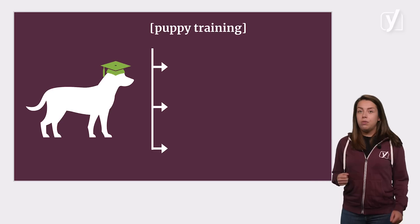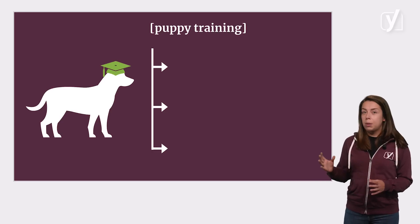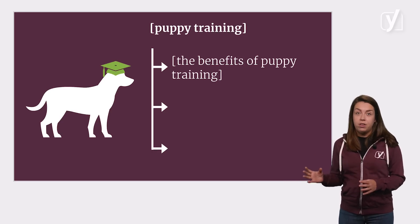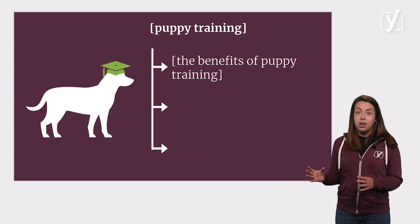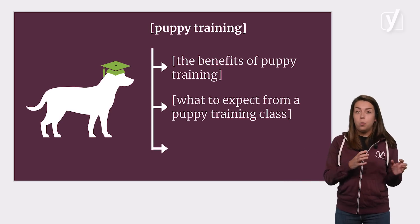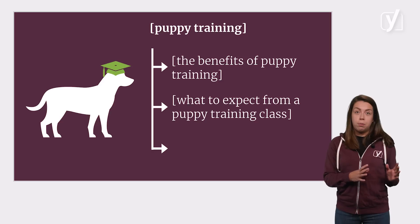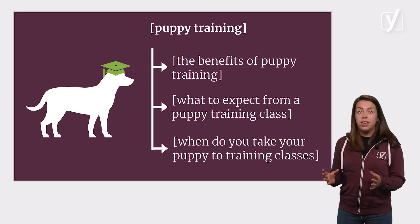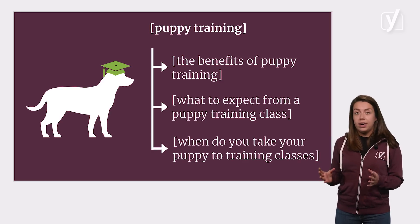Of course, you can have multiple articles about similar topics, but try to optimize them for different aspects of one term. So if you're writing about puppy training, you can have one article optimized for the benefits of puppy training, one for what to expect from a puppy training class, and another one for when to take your puppy to training classes.